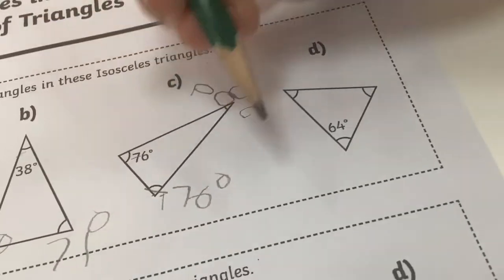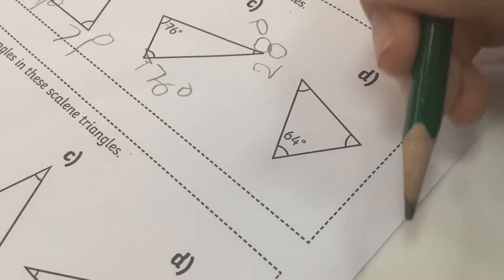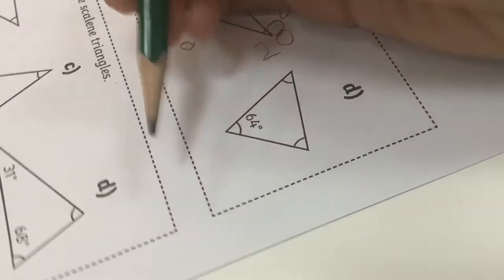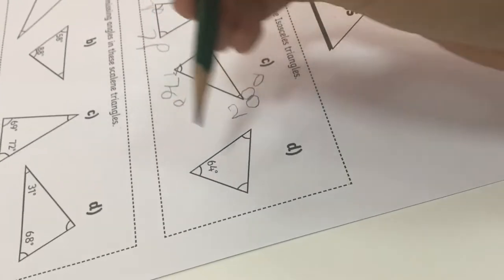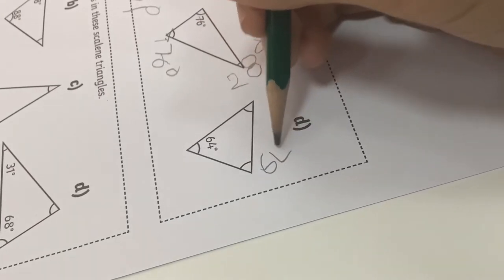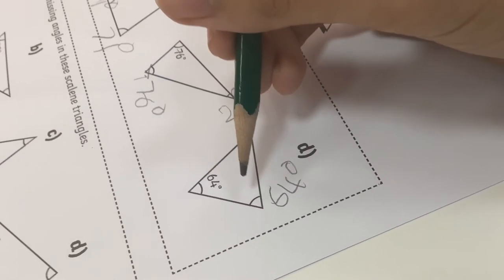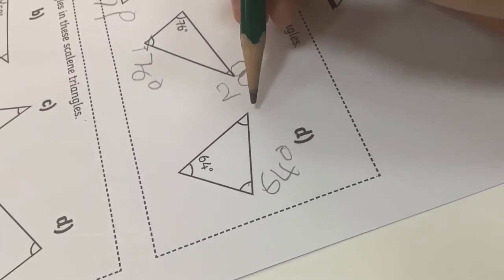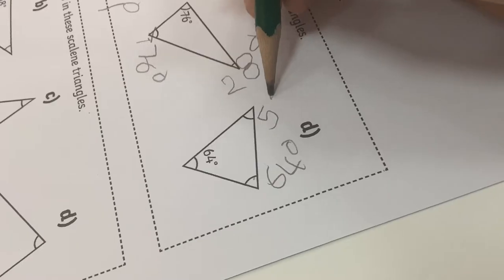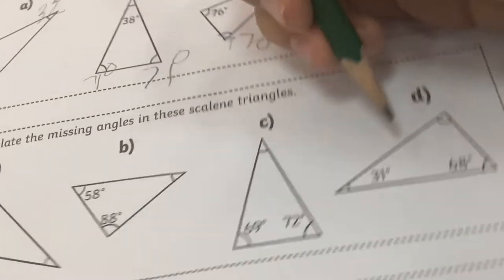And the fourth one is like this. So this one should be 64 degrees. And I'm going to put what is 180 minus 128, which is 52. And that's the first one done.